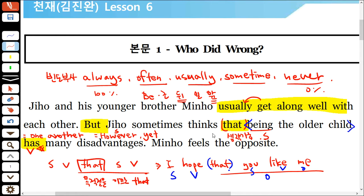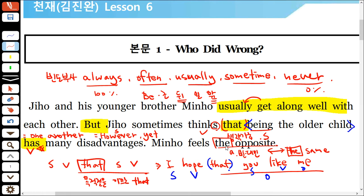문장 전체를 봤을 때 본주어와 본동사는 Jinho, thinks예요. Jinho는 3인칭 단수이기 때문에 think 뒤에 s가 붙어요. 이어지는 'the opposite'에서 opposite은 '반대인'이라는 형용사예요. 반대 뜻은 same인데, opposite은 same처럼 반드시 앞에 the와 함께 써야 해요.